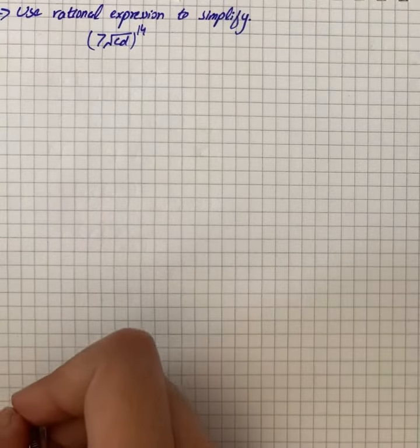So here we have a question to solve that says use rational expression to simplify, and we have 7 under root cd raised to power 14.